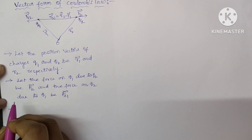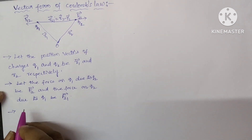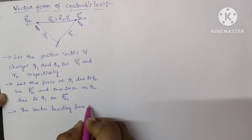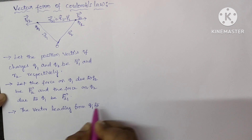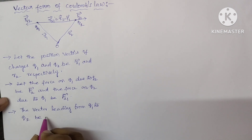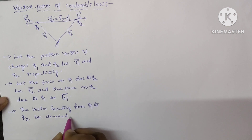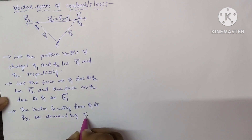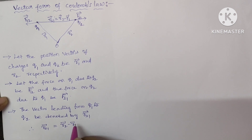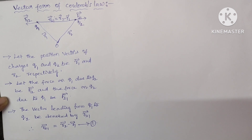The vector leading from Q1 to Q2 be denoted by R21. Therefore, R21 bar is equal to R2 minus R1. Let it be equation number 1.